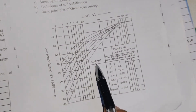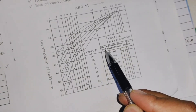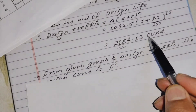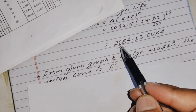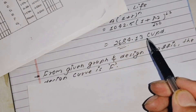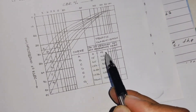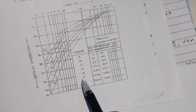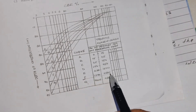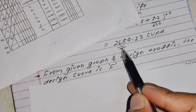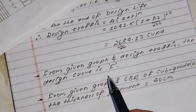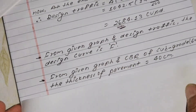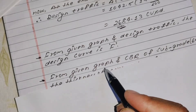The design categories are A, B, C, D, E, F, and G types based on the number of commercial vehicles per day. The value 2684.13 falls in the range of 1500 to 4500, which corresponds to design category F. So the design category is F.